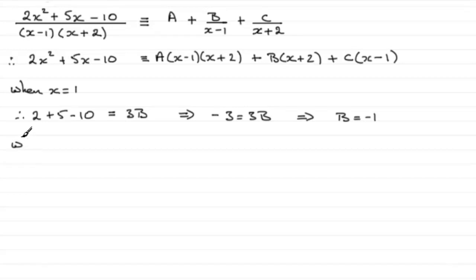So when x is minus 2, what do we have here? We've got 2 multiplied by minus 2 squared—well I think what we'll do is just put that in for the moment. 2 times minus 2 squared plus 5 times minus 2 minus the 10, and that's going to be equal to—well this is going to go to 0 so that takes that term out. This factor is 0 so that term goes, and when we get to here minus 2 minus 1 is minus 3, so you end up with minus 3c.